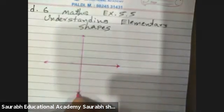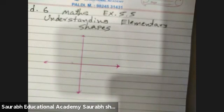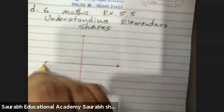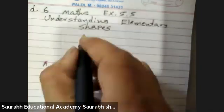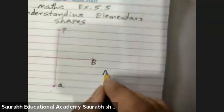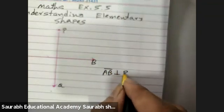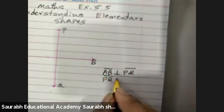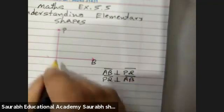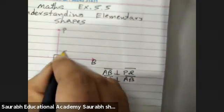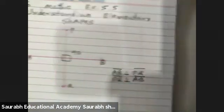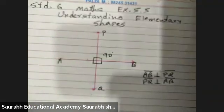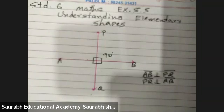We are taking two segments. For example, this is segment AB and this is segment PQ. So we can write line segment AB is perpendicular to PQ, or line segment PQ is also perpendicular to AB. All these four angles will be of 90 degrees. Let's solve the first question given: which of the following are models for perpendicular lines?